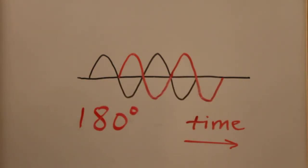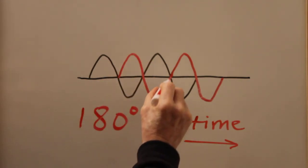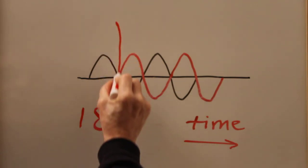The same thing would happen if we shifted it earlier in time, so that the red wave would lead the black one by one half of a cycle or 180 degrees. Note that in this range right here, these two waves are exactly inverted with respect to each other.